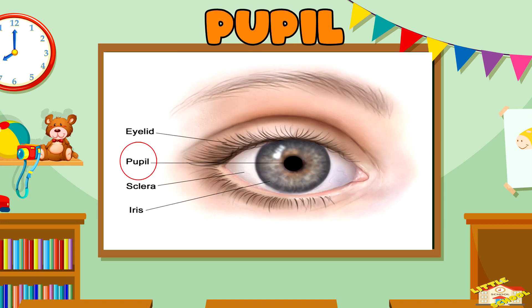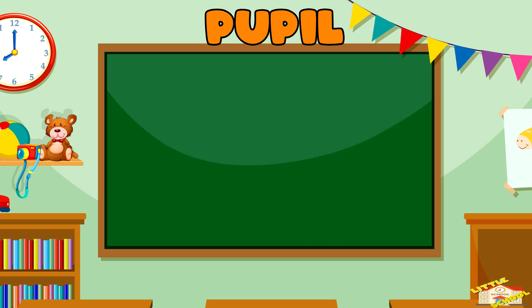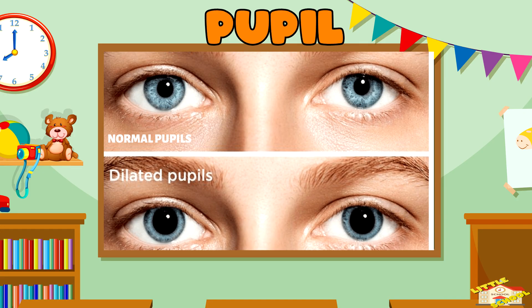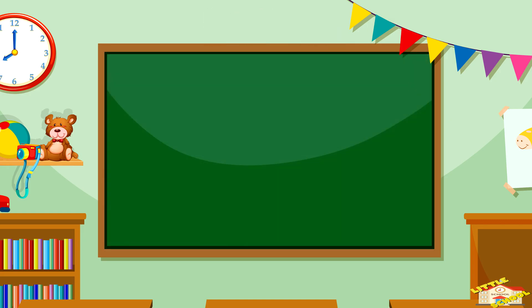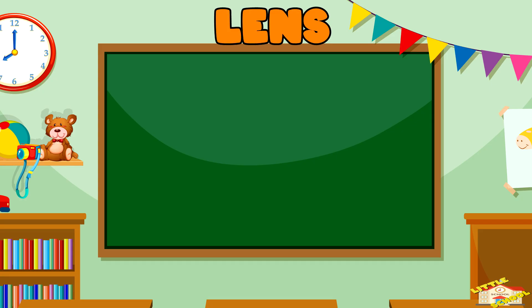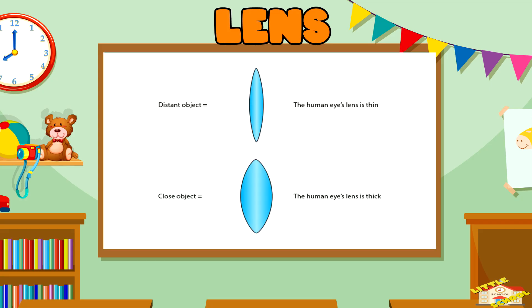Pupil: The pupil is the black circular opening in the center of the iris. It adjusts size depending on the light, dilating in low light and constricting in bright light. Lens: The lens is located behind the iris and pupil. It focuses light onto the retina by changing its shape.